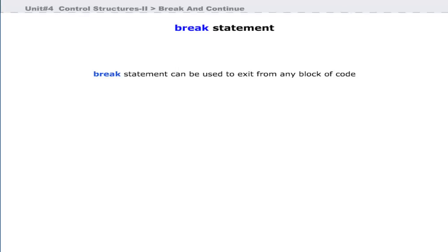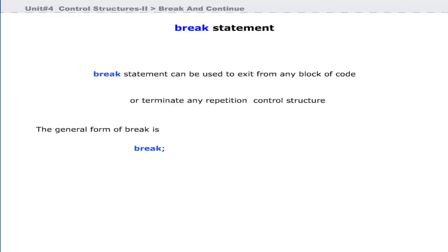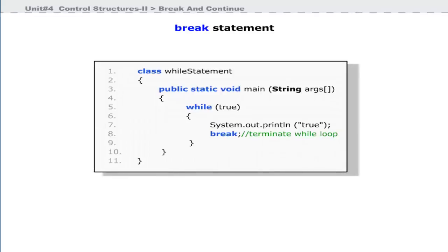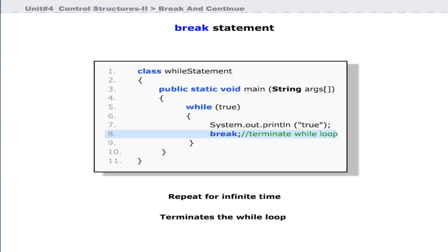Now let us discuss the break statement. The break statement can be used to exit from any block of code or terminate any control structure. Its general form is the break keyword followed by a semicolon. If we remove the break statement at line 8, this program will repeat for infinite time. The break statement terminates the while loop at line 8 and is executed only once.